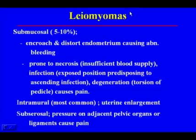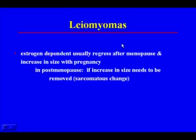Intramural fibroids most commonly cause uterine enlargement and can cause pain when they necrose and degenerate. Subserosal fibroids cause pressure on adjacent pelvic organs or ligaments, causing pain. Leiomyomas are estrogen-dependent, usually regress after menopause, and increase in size with pregnancy. In postmenopausal women, if a leiomyoma increases in size, it needs to be removed because of the risk of sarcomatous changes.